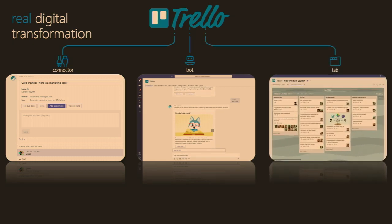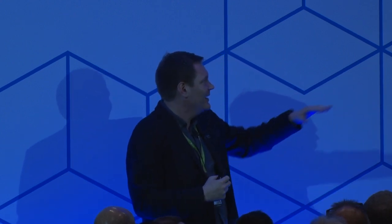Let's look at an example. Trello is one of the third-party partners we work with — it's a task management system. The app lets us do a couple of things. First is a connector — a push: when something happens in Trello, I can get a notification right inside my channel saying a task has been assigned to me. I can interact with it directly inside Teams, add notes, at-mention somebody, push it to someone else, or change it right there and then inside the application.